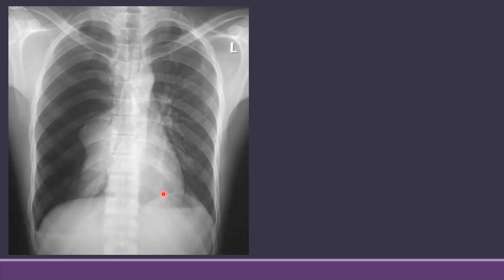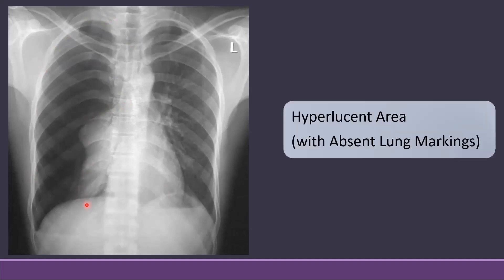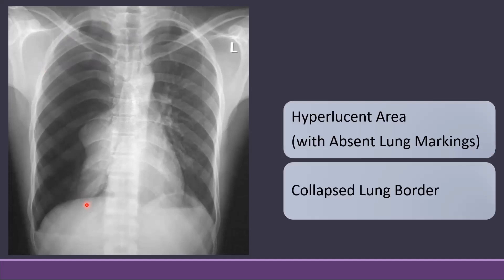So this chest X-ray is showing a hyperlucent area in the right lung field with collapsed lung margins, which are features of right-sided pneumothorax.